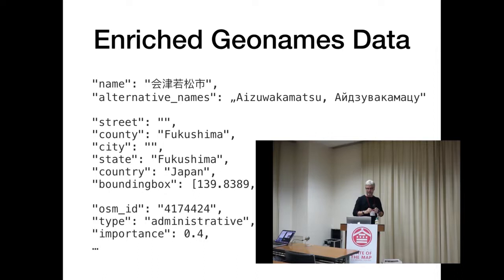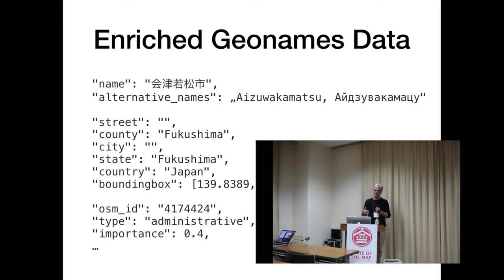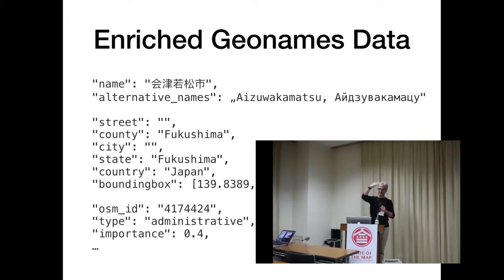It's a county — Fukushima. That's a standardized name in our scheme. In fact, it's not called a county in Japanese, but we have a standard database schema which mentions street, county, city, state, country, and then Japan — then it stops.